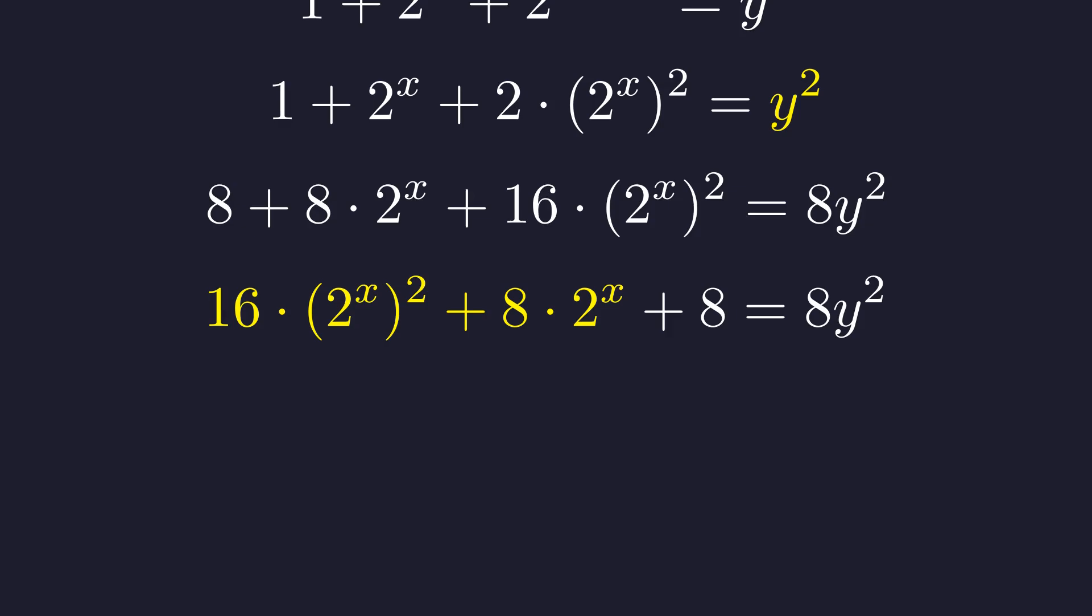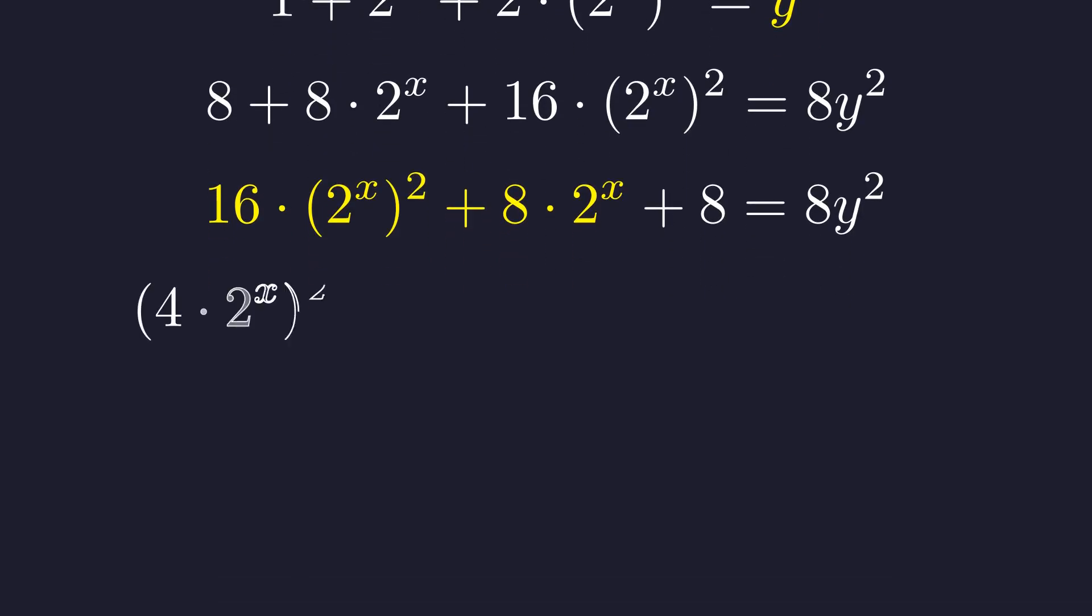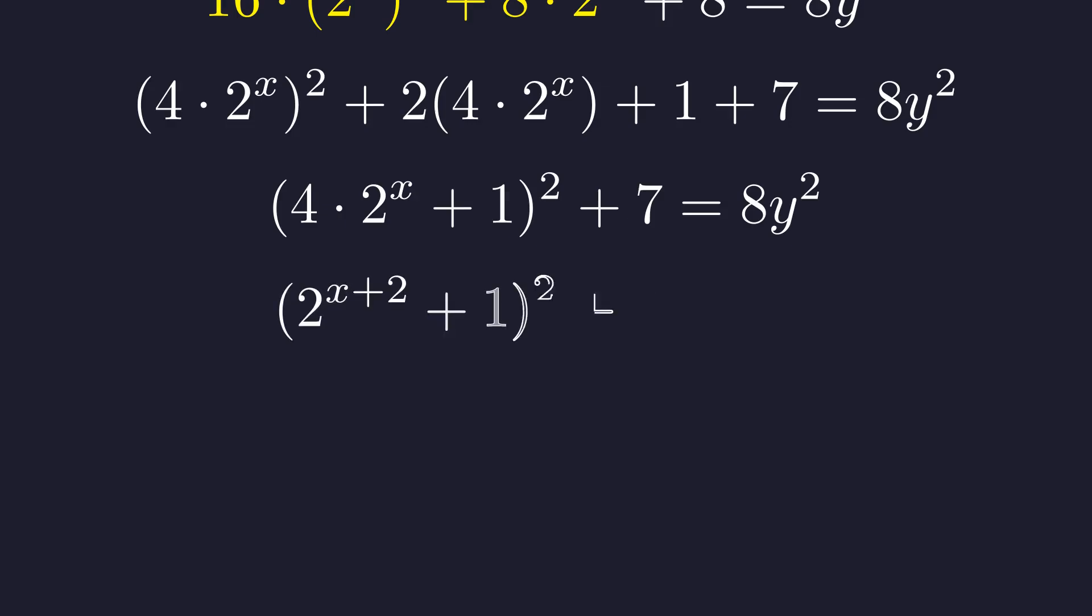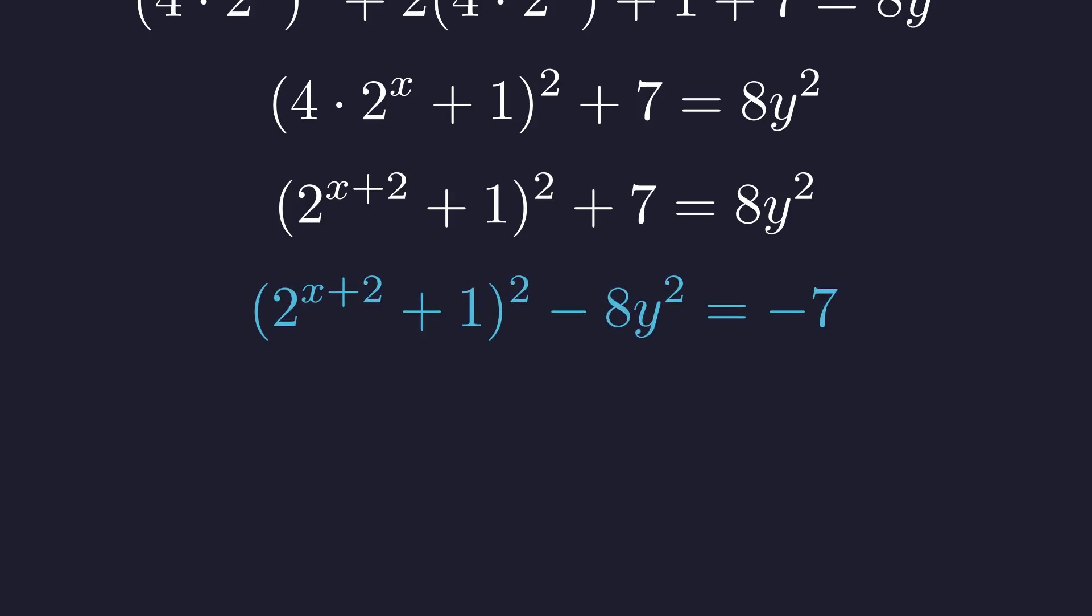We are so close to completing the square. We can split the 8 into 1 plus 7. This gives us the plus 1 we need to complete the square. The first three terms now form a perfect square. Simplifying 4 times 2 to the x gives us 2 to the x plus 2. Rearranging this, we get a famous type of diophantine equation known as a Pell-type equation. The entire problem now reduces to this. We need to find solutions where this first term is of the special form 1 plus a power of 2.